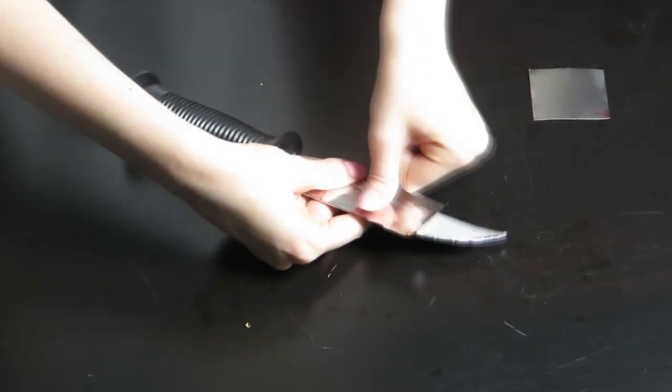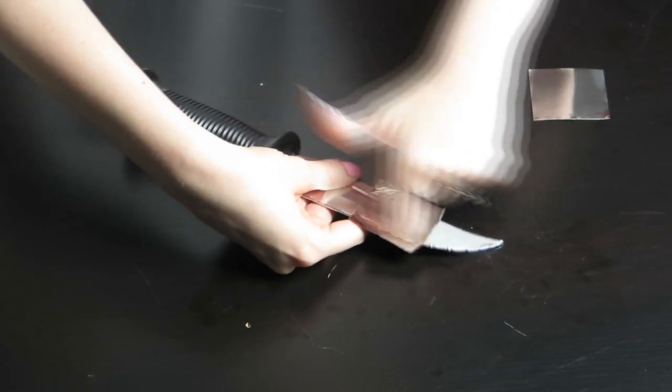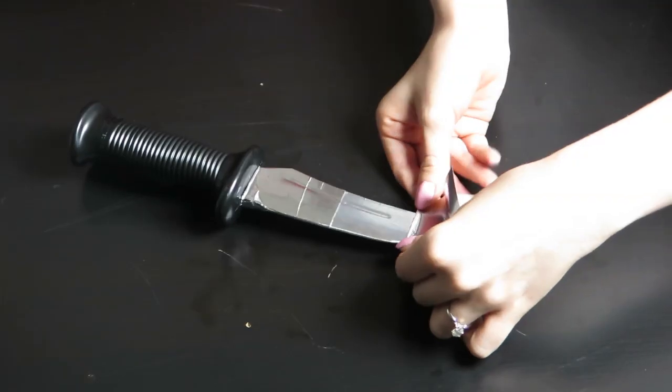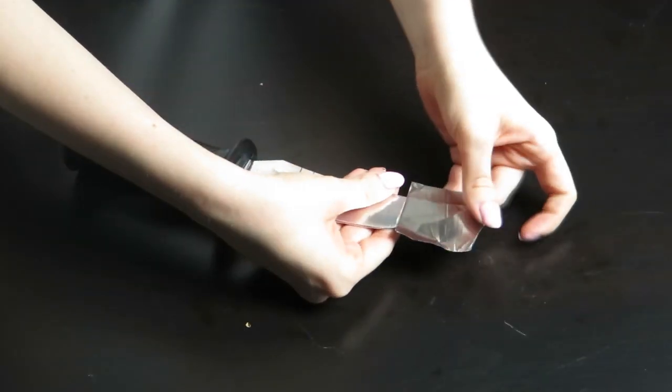Because of this, I recommend working in small sections as opposed to covering the entire length of the blade with large pieces. Doing this will give you more control over the tape and will help you achieve a smooth finish with little to no mistakes.